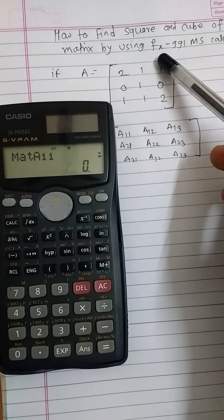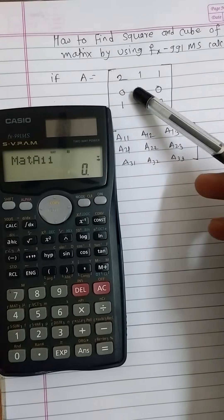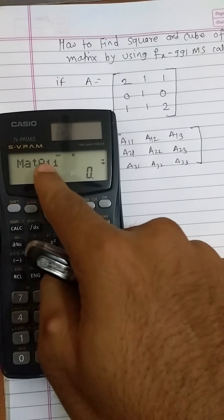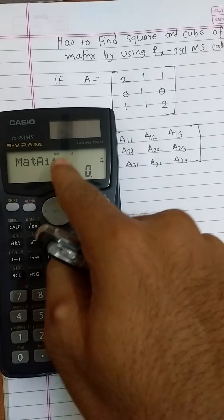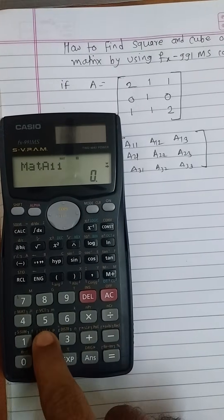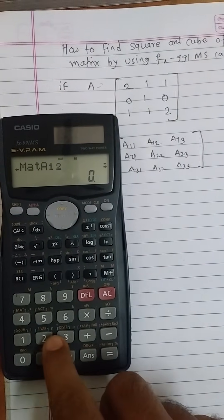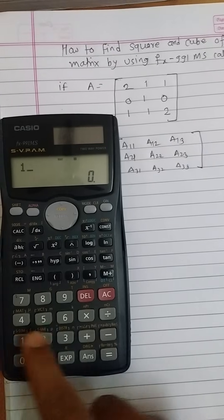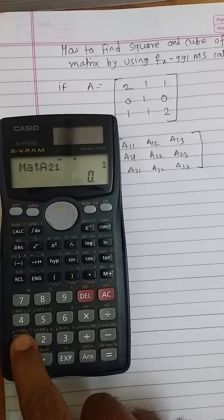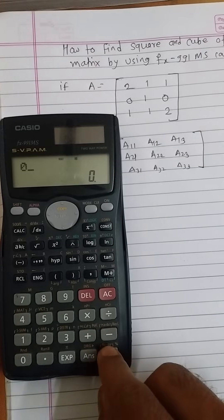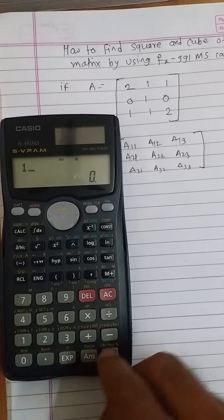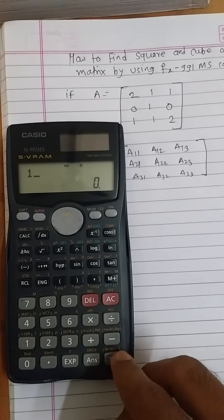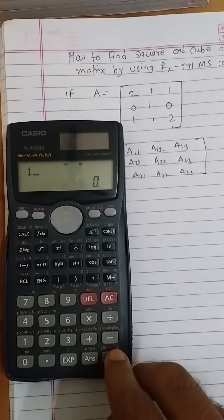Similarly, our matrix a11 entry is two, therefore put two, press equal button. Next entry is one, press equal button. Next entry is one, then zero. Put entries, press equal button, one equal button, zero equal button, one equal button, one equal button, one equal button, two equal button.